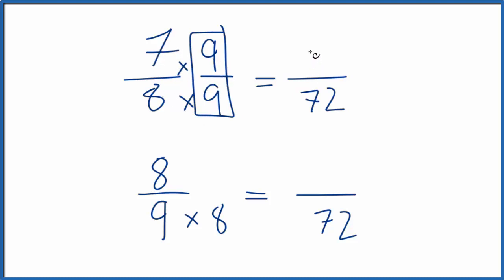7 times 9, that's 63, and then we have 8 times 9, that's 72. Down here, I need to multiply by 8 over 8. 8 times 8 is 64, 9 times 8 is 72. And 64 over 72, that's the same thing as 8 ninths.